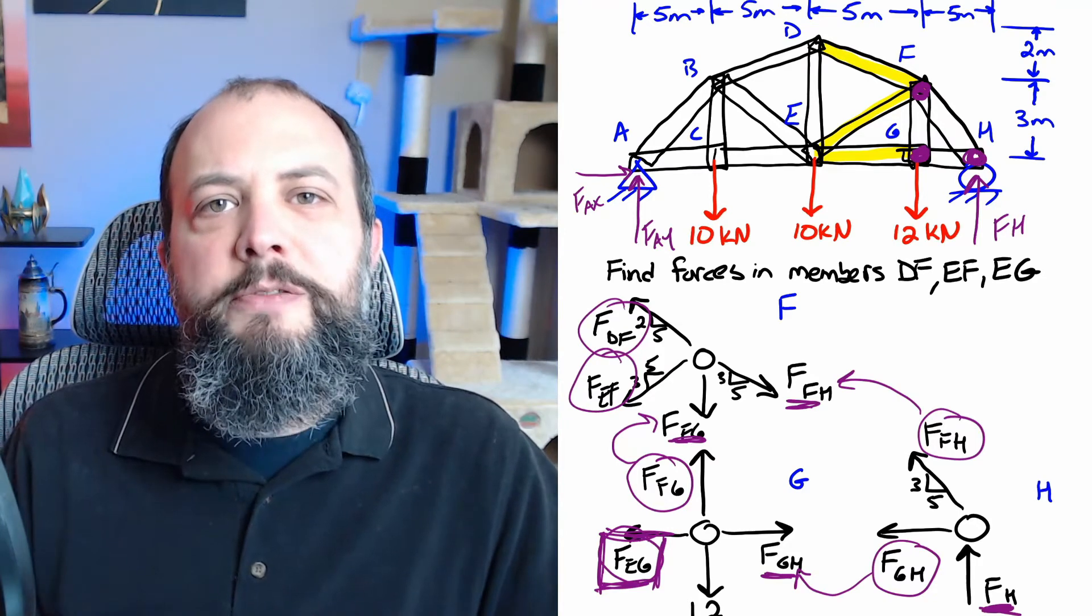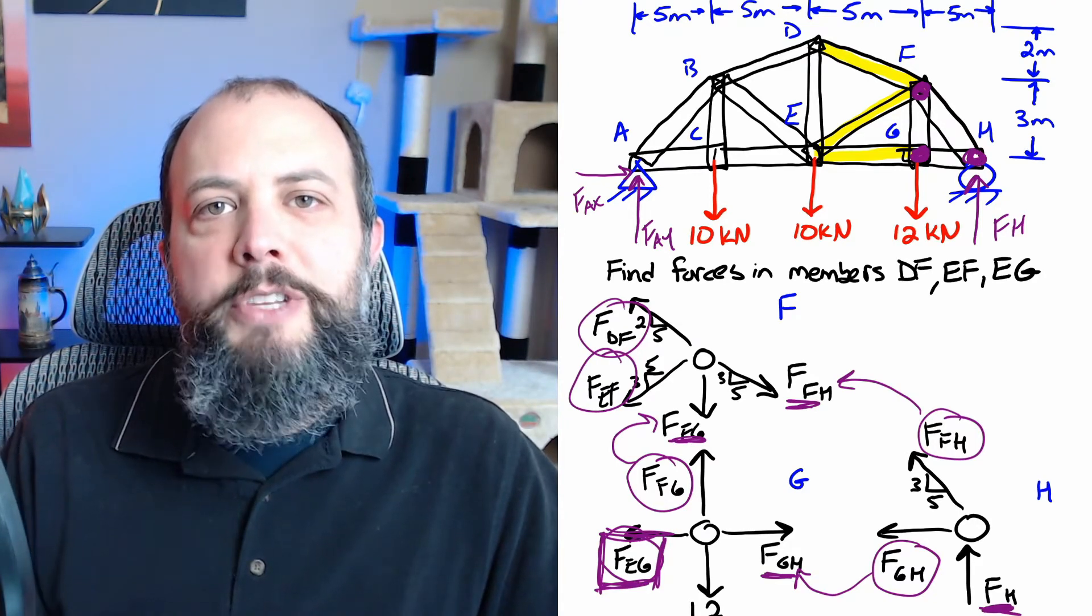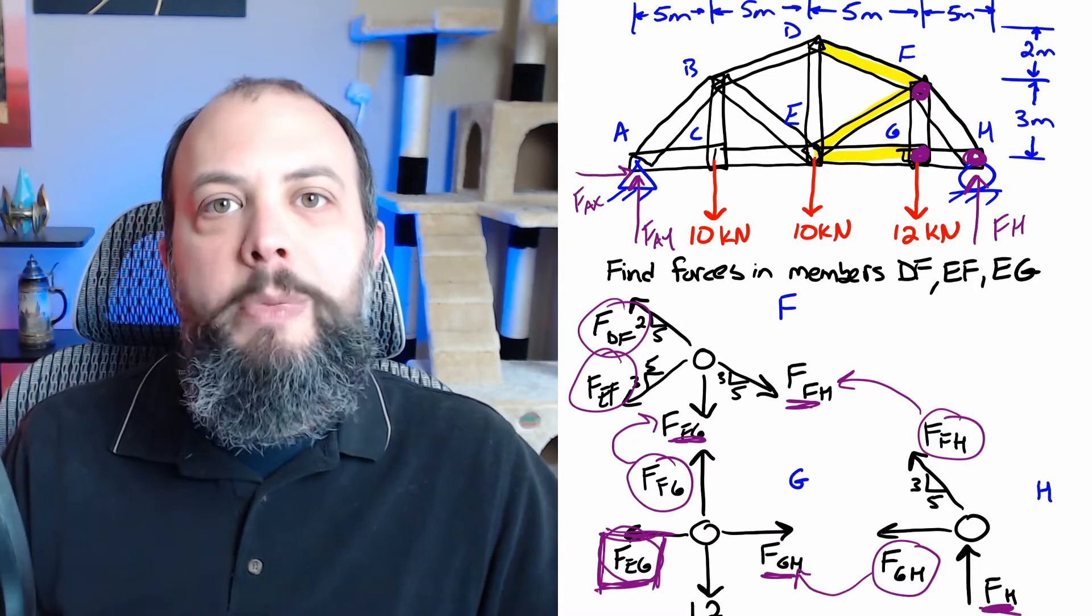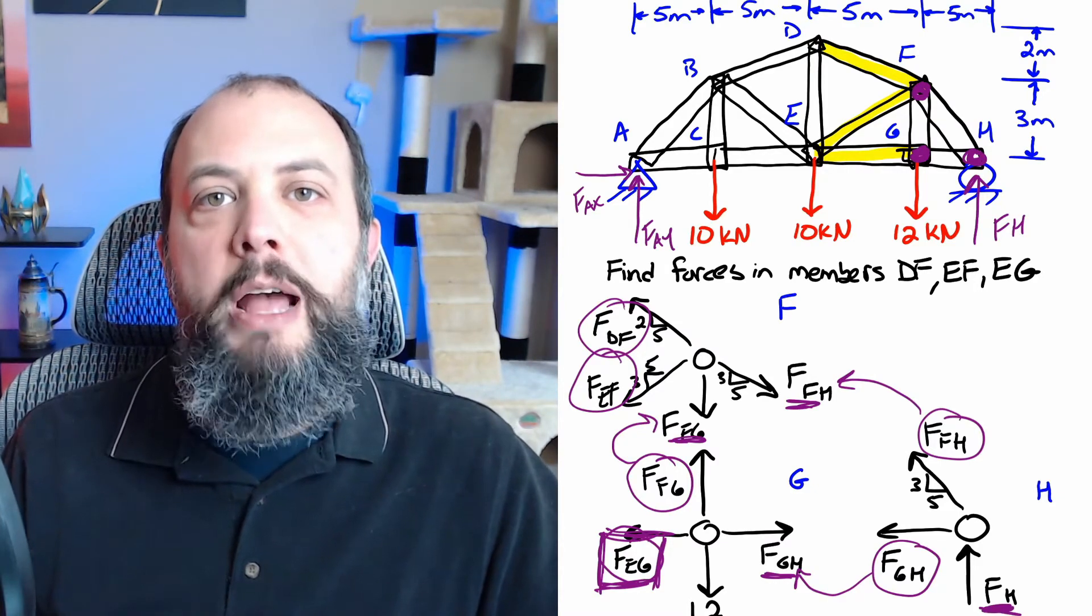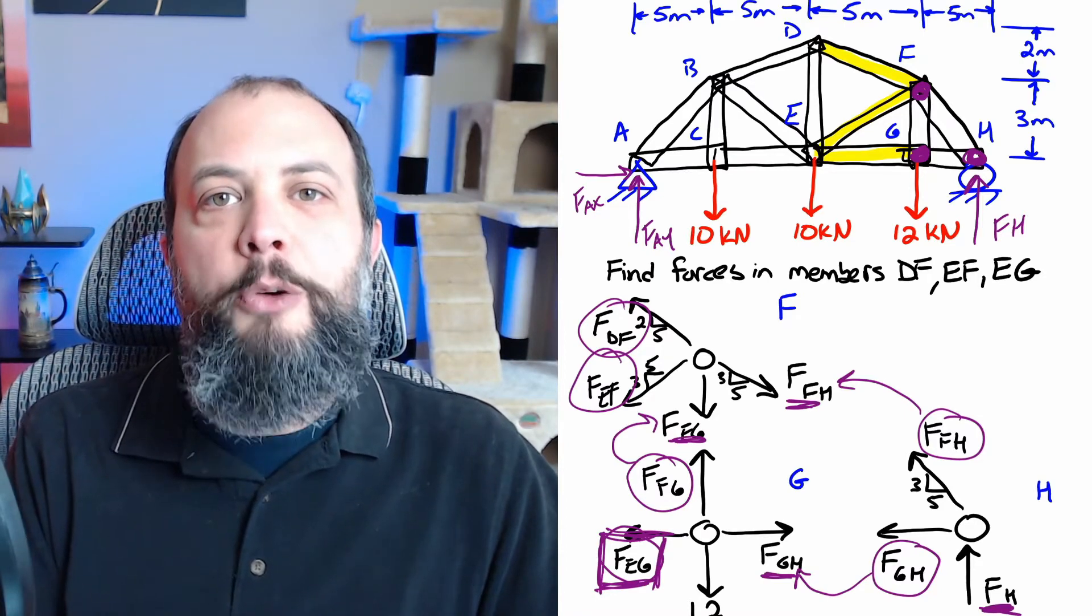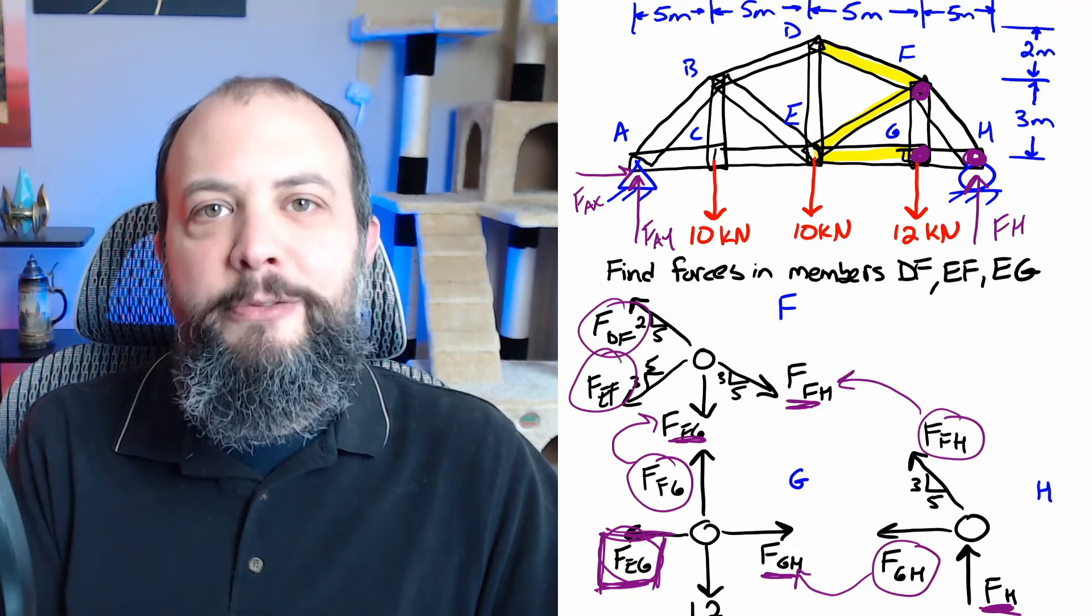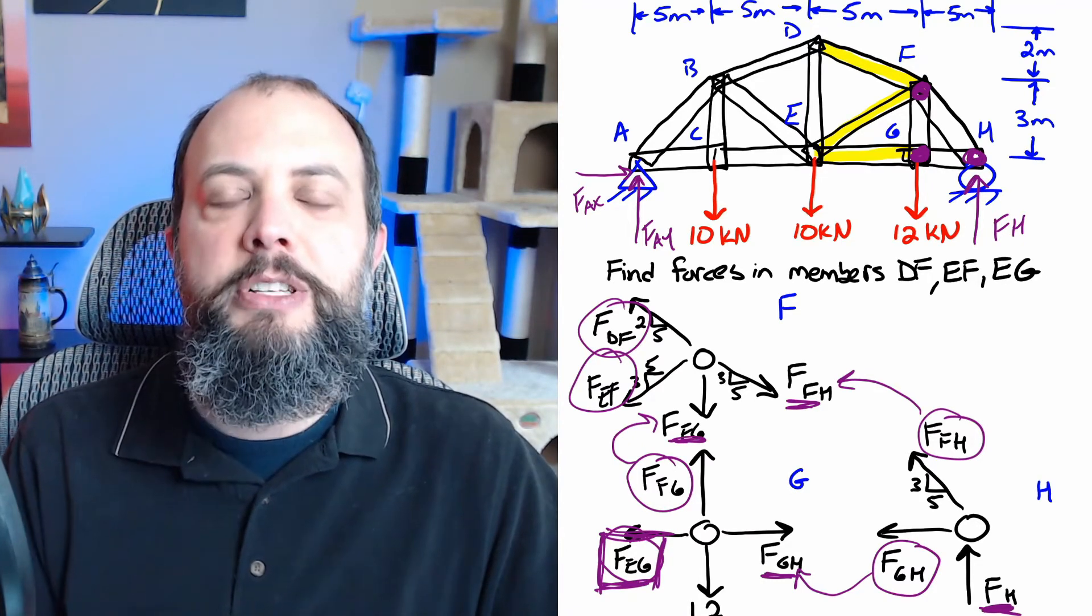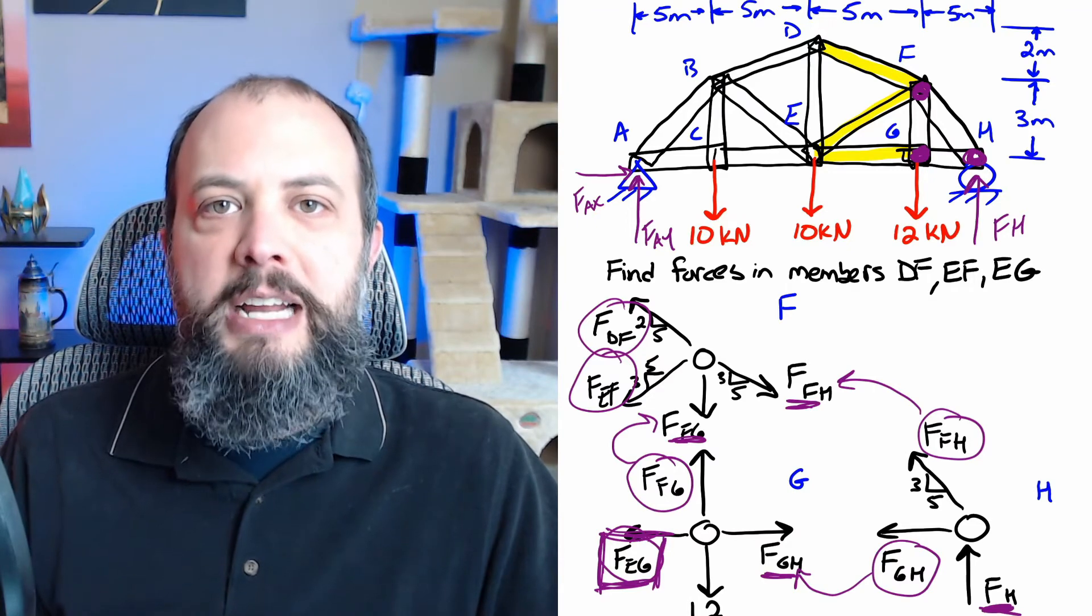So the main advantage to method of joints is that all of these particle equilibrium problems are particle equilibrium there's no moments only sum of forces in X and Y so this method is probably easier. The disadvantage is that we couldn't solve for the final answer right away we actually had to solve for three different members first before solving the final answer and so this method is longer it takes more time and had more steps.